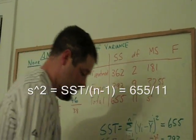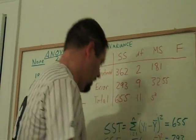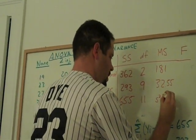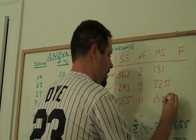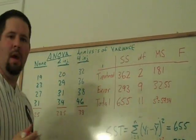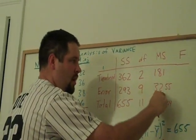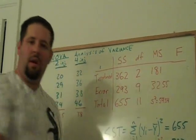655 divided by 11, that's 59.54. So, that was our sample variance. But this is our mean squared error. This is our mean squared treatment.